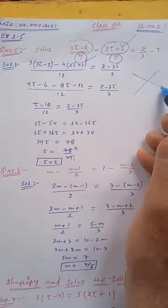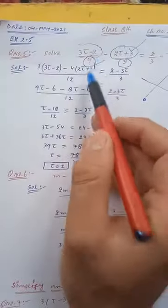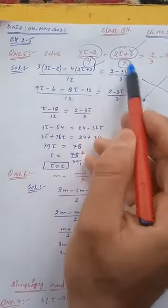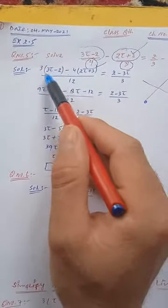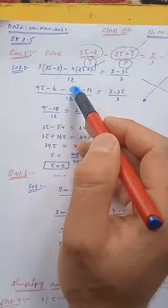You are multiplying this with 3 and similarly 4 with that number. So 3 into this minus 4 into that number, divided by 4 × 3 is 12.